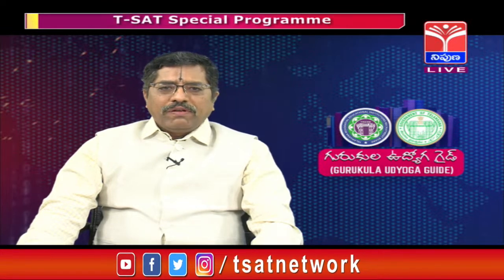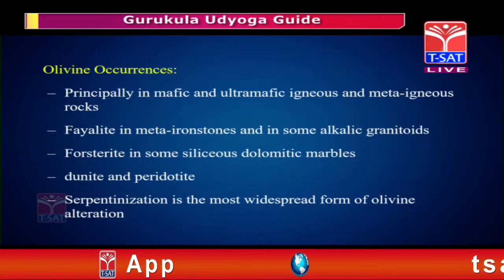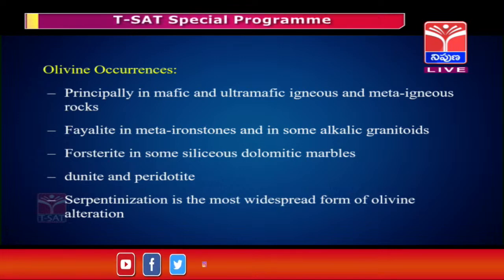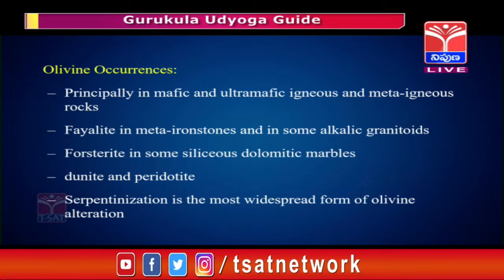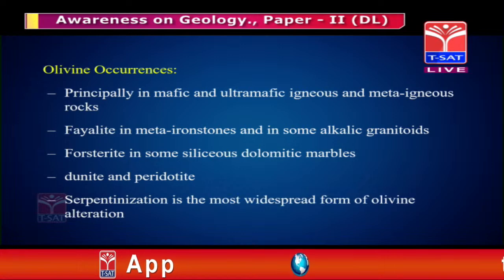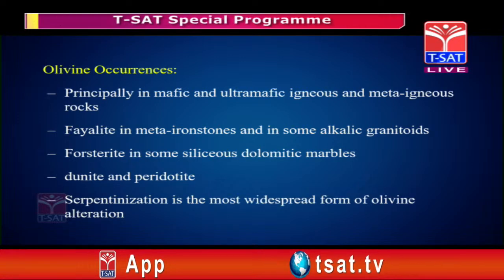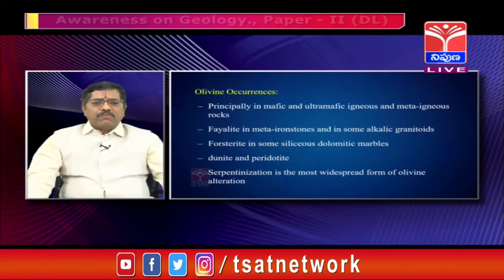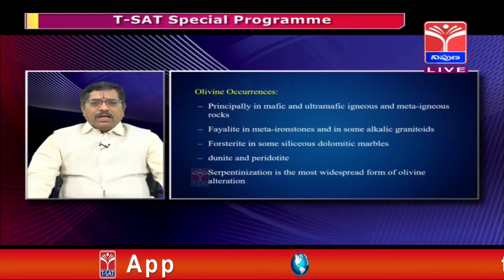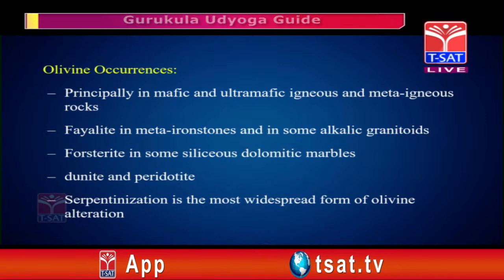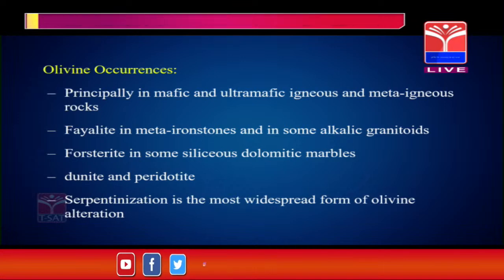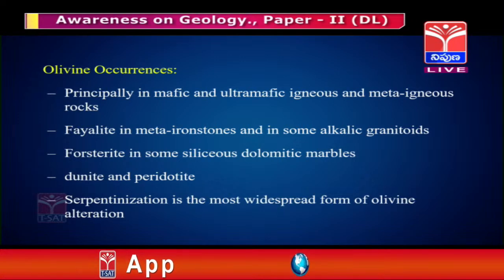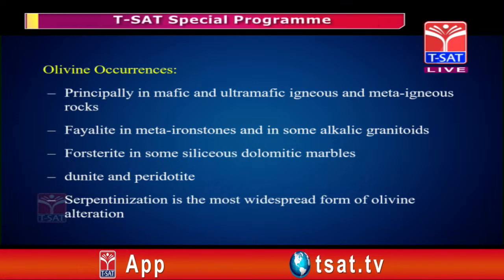In mineralogy, we will start with olivine. Olivine is the first mineral in Bowen's reaction series, in the discontinuous series. It principally occurs in mafic and ultramafic rocks. The two main minerals are forsterite and fayalite — forsterite being magnesium-rich and fayalite being iron-rich. The only monomineralic rock containing olivine is dunite; another rock containing olivine is peridotite. Olivine weathers very easily because it is the first mineral in Bowen's reaction series, and it weathers to serpentine, which is a very common altered product of olivine.